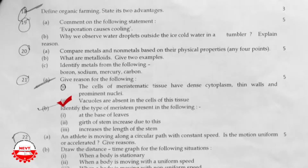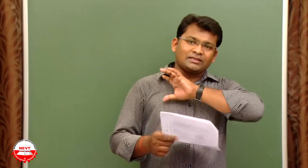Meristematic cells also have prominent nuclei. Vacuoles are absent or very small in these cells because the cells are young with high division capacity — all cell organelles are widely present and cytoplasm is densely arranged, leaving very little or no space for vacuoles.